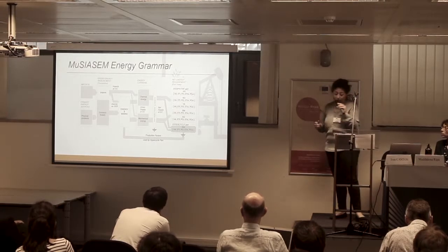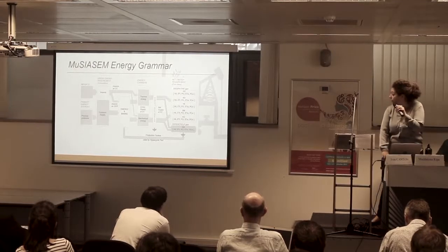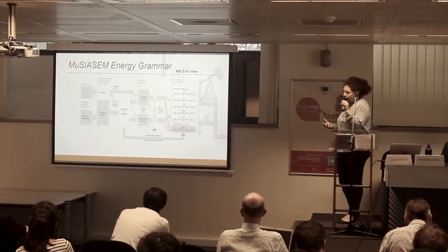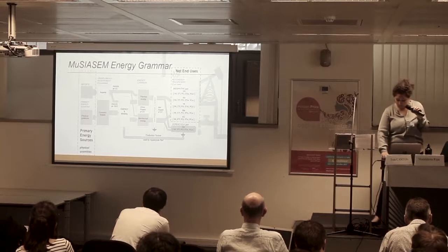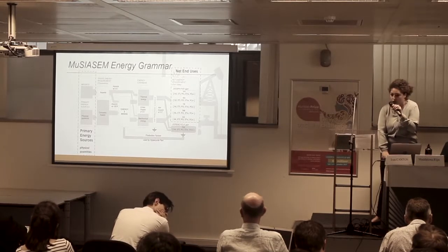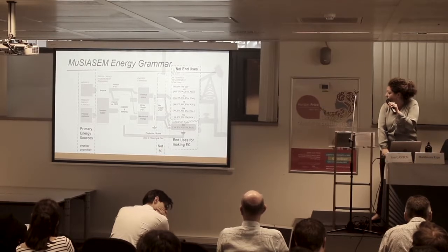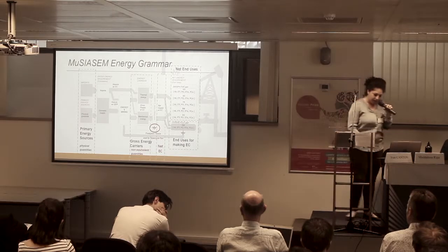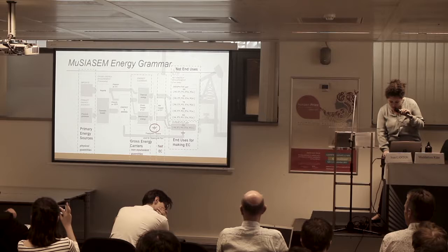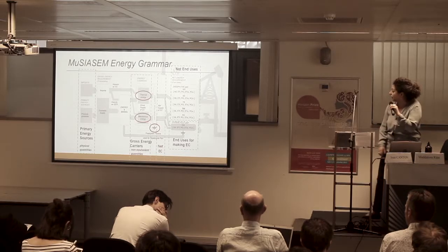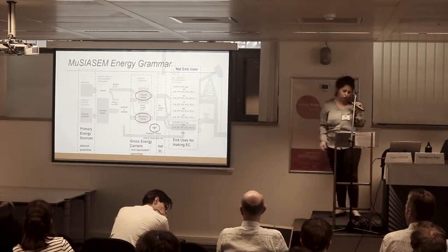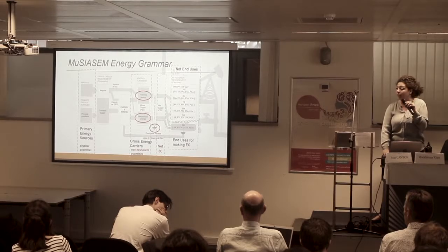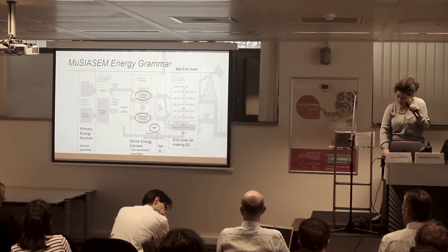Here is the energy grammar we use. We have the end users — who is using the energy carriers and how. Then we have the primary energy sources representing feasibility. We also have part of the energy carriers in the hypercycle, since the energy and money system itself consumes energy. The formal categories split energy carriers into at least two, but usually three: fuel, heat, and electricity, depending on the task the energy carriers are dealing with.